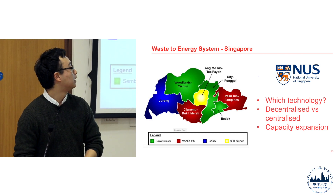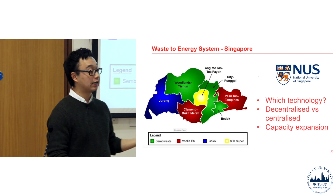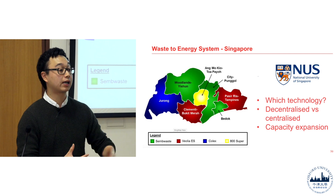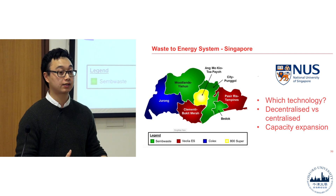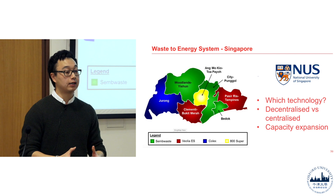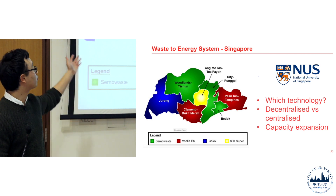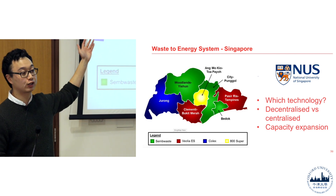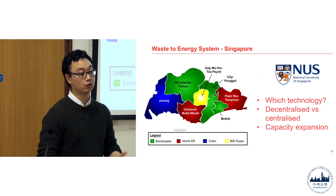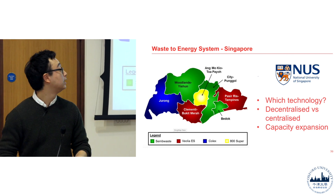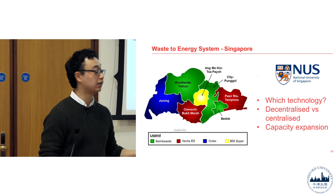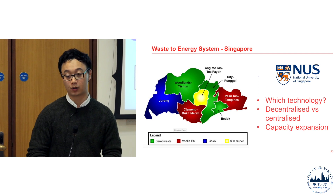Is it better to consolidate everything or have separate processing sites across Singapore? Another question is expansion — we're generating more and more waste over time. How do we expand and upgrade different sites? I'm looking at 10-year spans: which sites to upgrade and what capacities to build for.